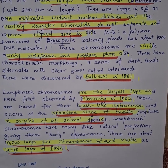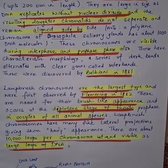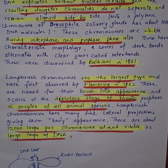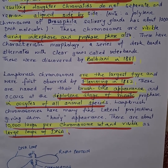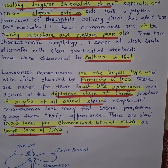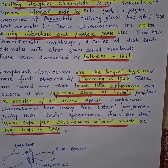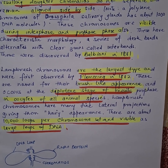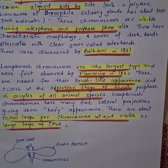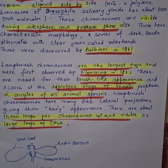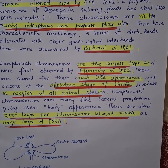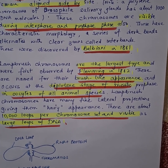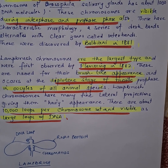Their important characteristic morphology includes a series of dark bands which alternate with clear zones called interbands. They were discovered by Balbiani in 1881. Lampbrush chromosomes are the largest type, discovered by Flemming in 1882. They are called so because of their brush-like appearance, and they occur during the diplotene stage of meiotic prophase in oocytes of animal species.